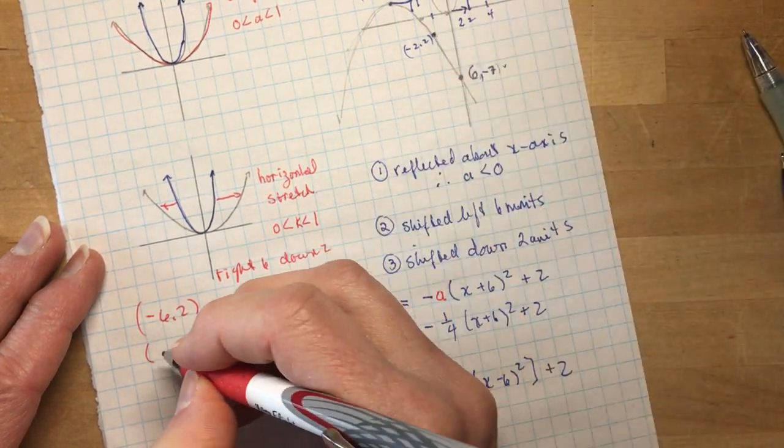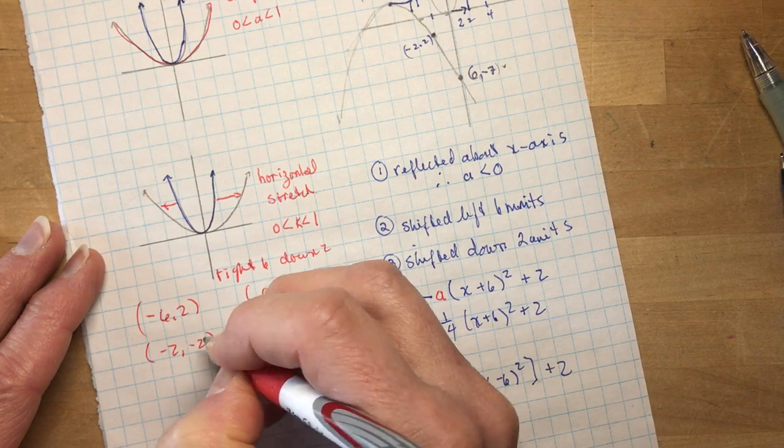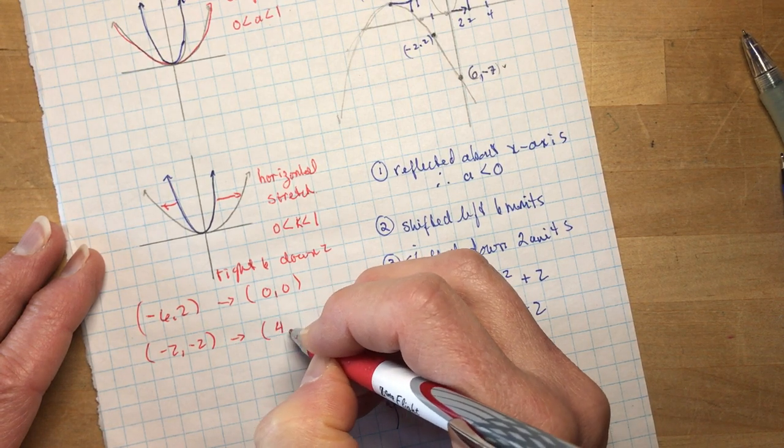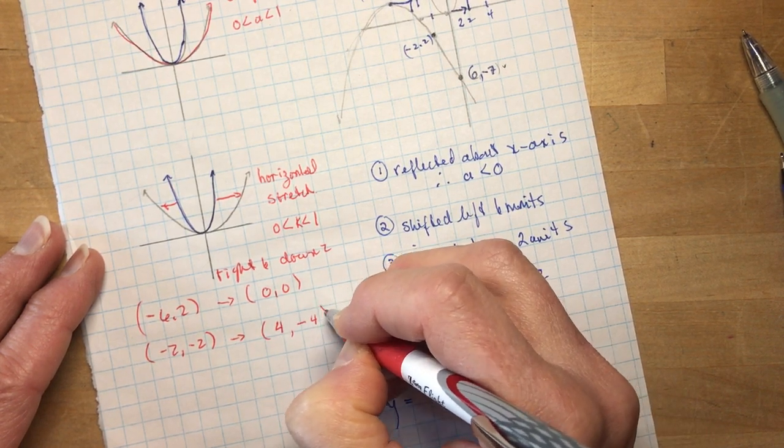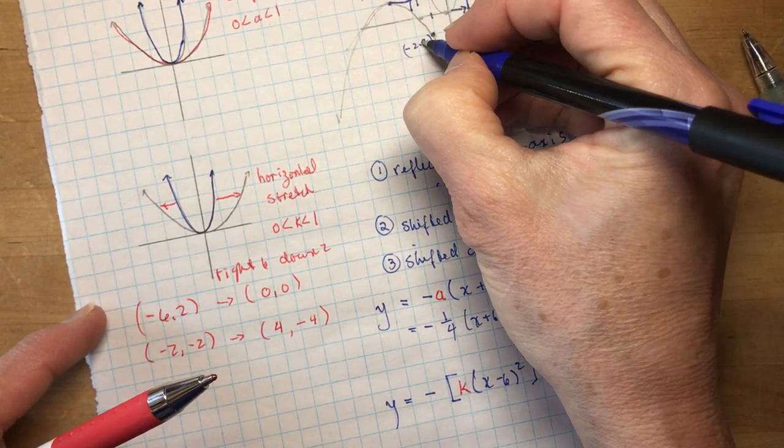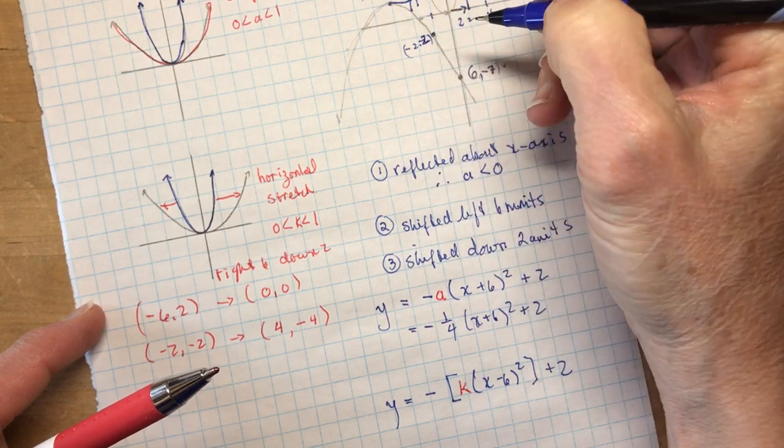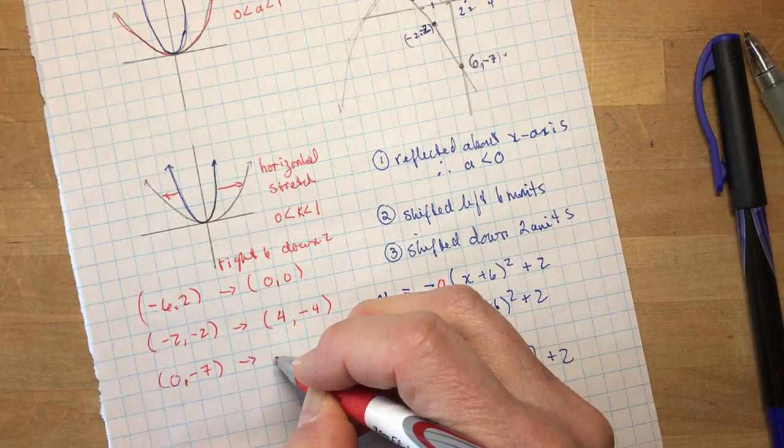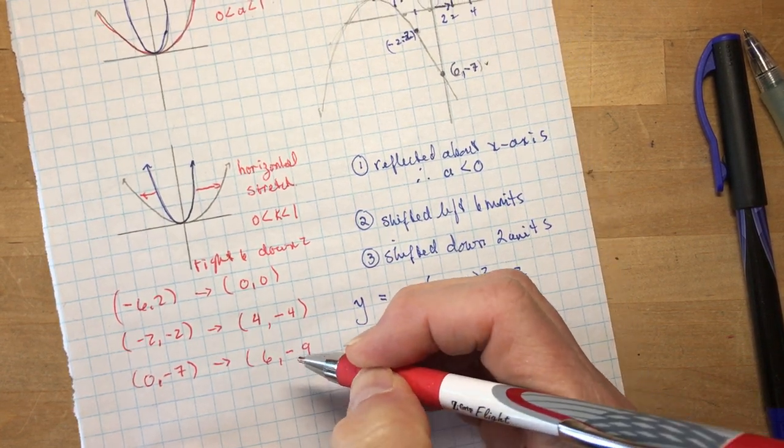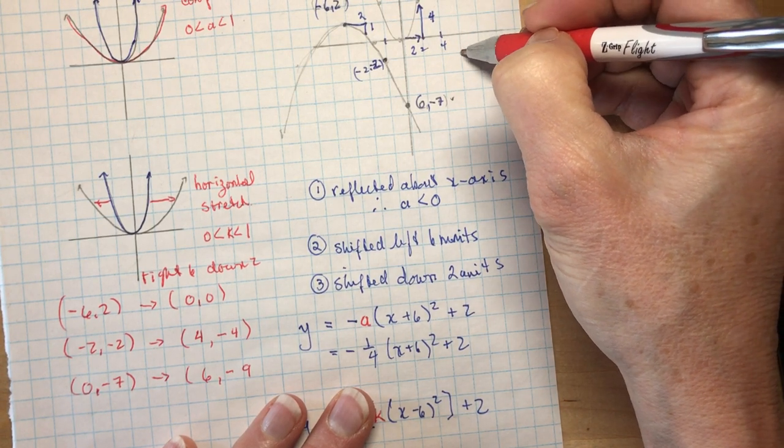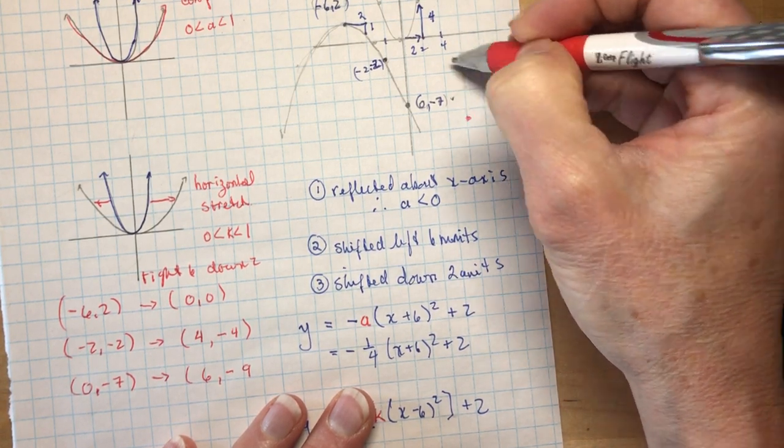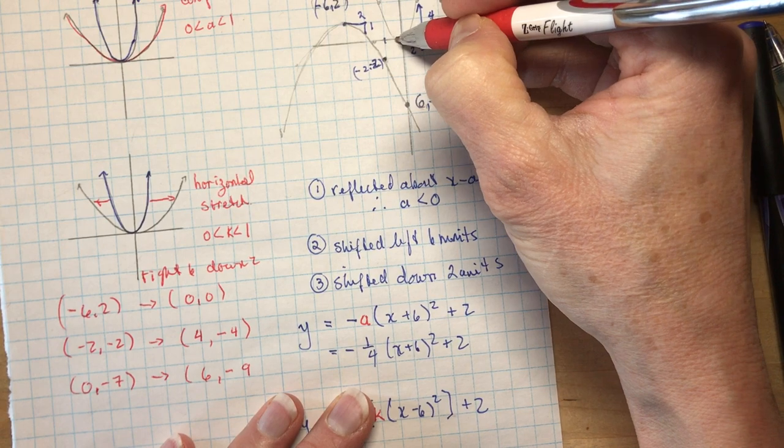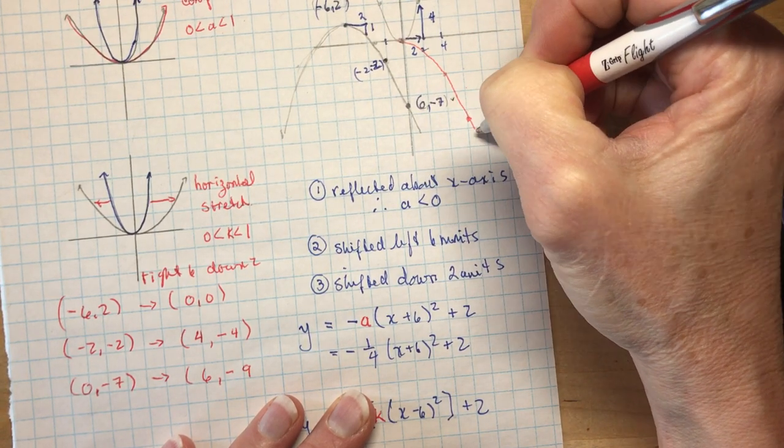If I take this point right here, which is minus 2 and minus 2, and I go right 6, that's going to take me to 4, and down 2, minus 4. If I take the point 0 and minus 7, and I move it right 6, that's going to give me 6, and down 2 is minus 9. So here is part of the parabola.